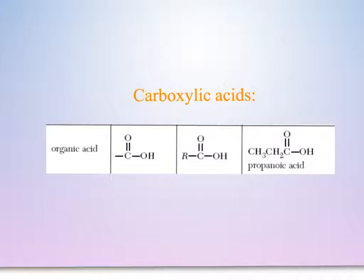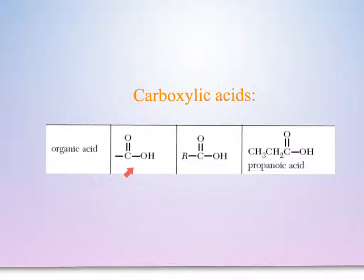As we begin with carboxylic acid, it's also called an organic acid. The general formula for an organic acid is a carbon double bonded to an oxygen attached to an OH. The functional group present in a carboxylic acid is the combination of the carbonyl group and the hydroxyl group. Together this is called a carboxyl group, written as COOH.